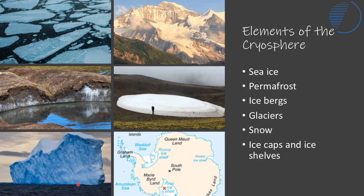Thirdly, icebergs, which break off ice sheets and off the terminus — the end of glaciers — which are discharging into the sea. We've also got all the snow found on Earth, and all the land-based glaciers, such as the Jungfrau Glacier in Switzerland.